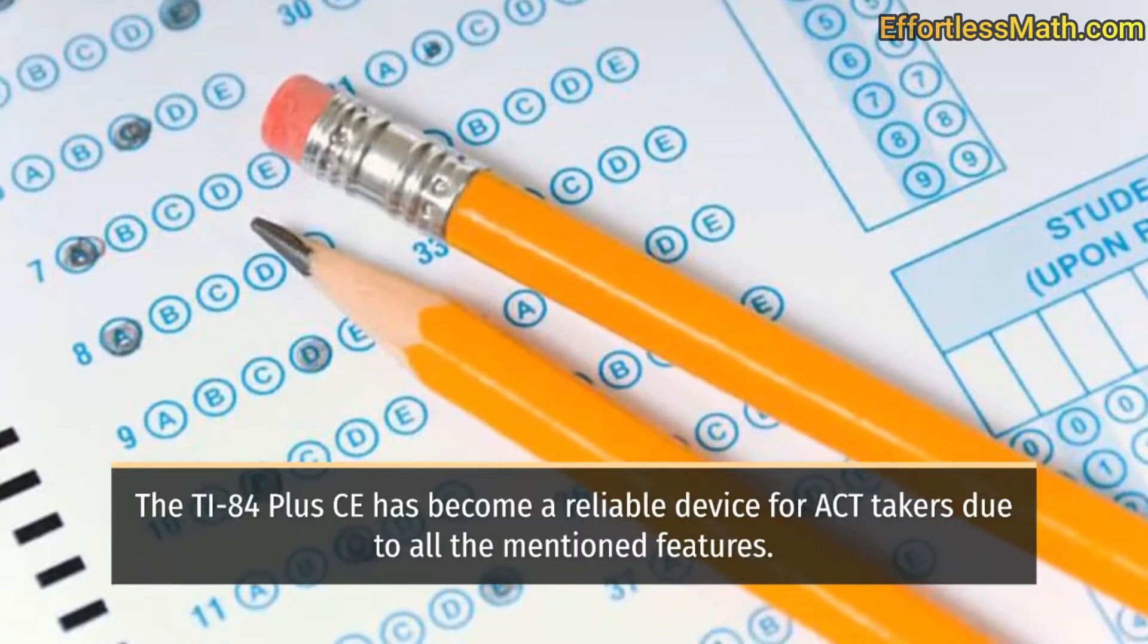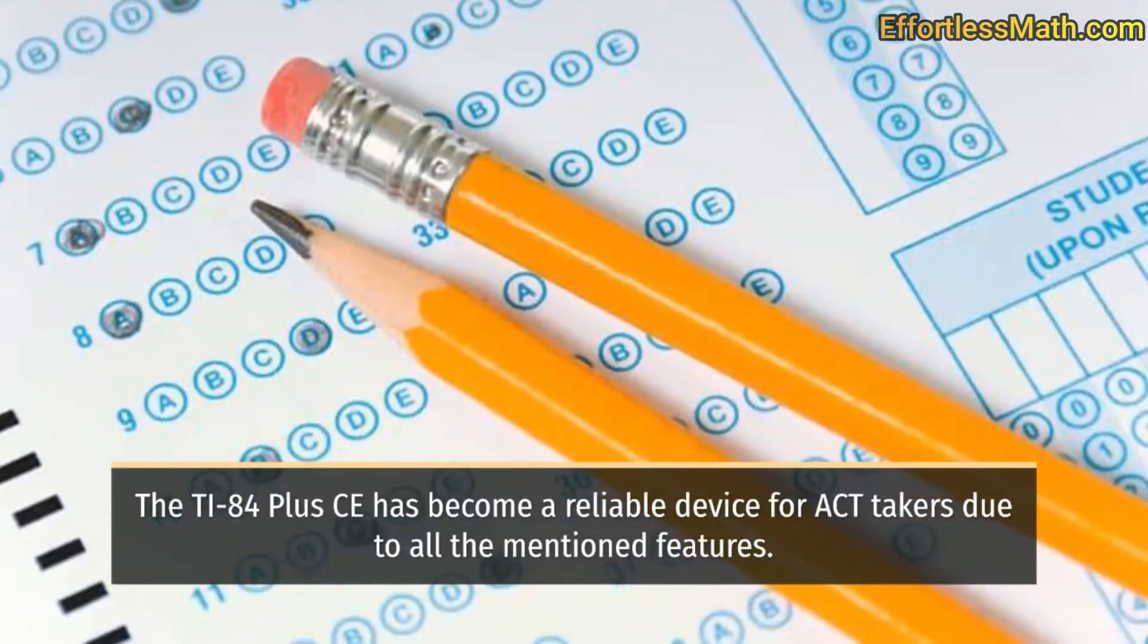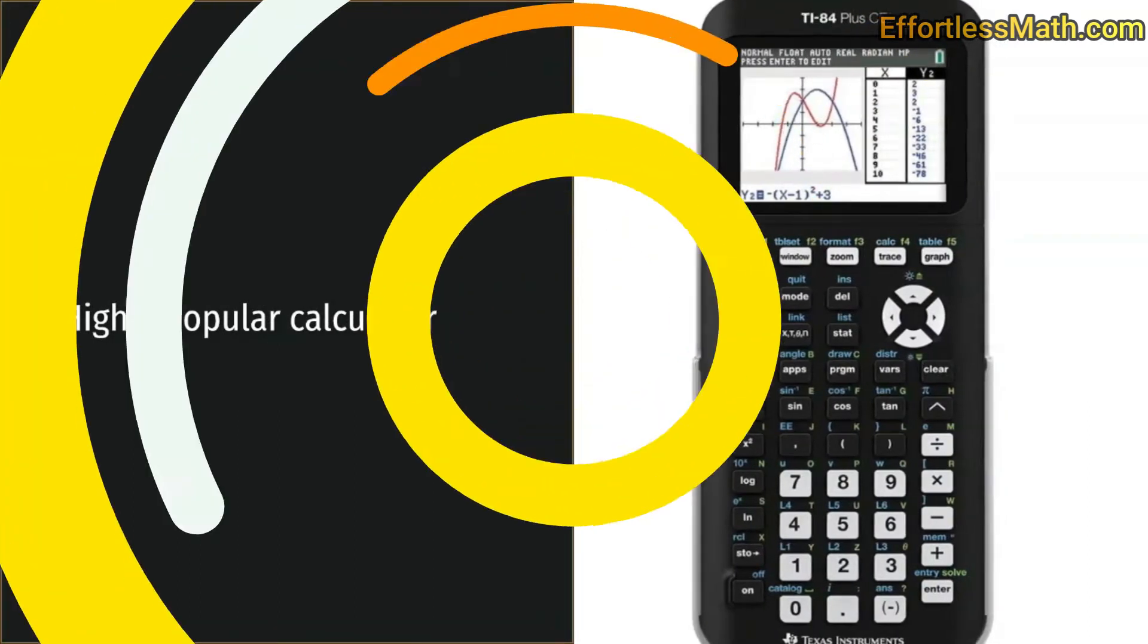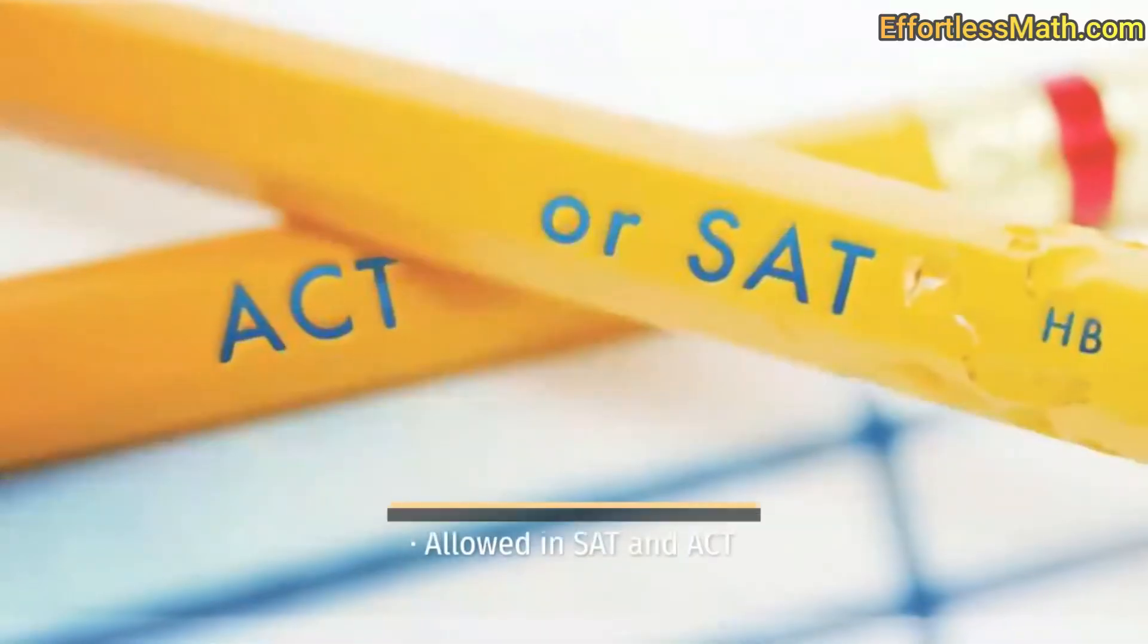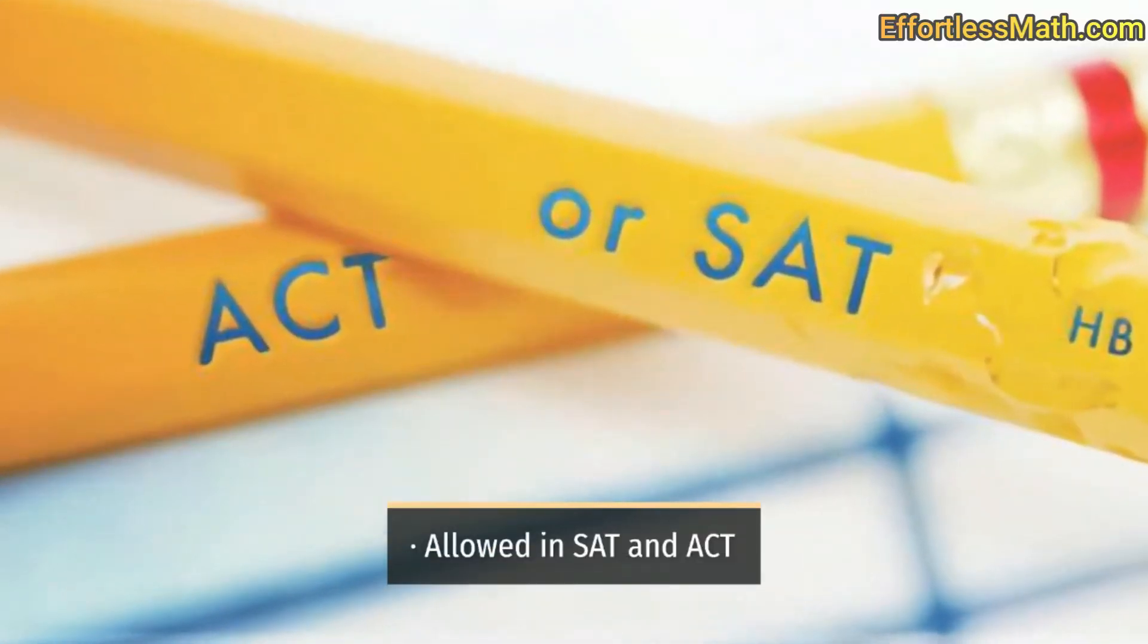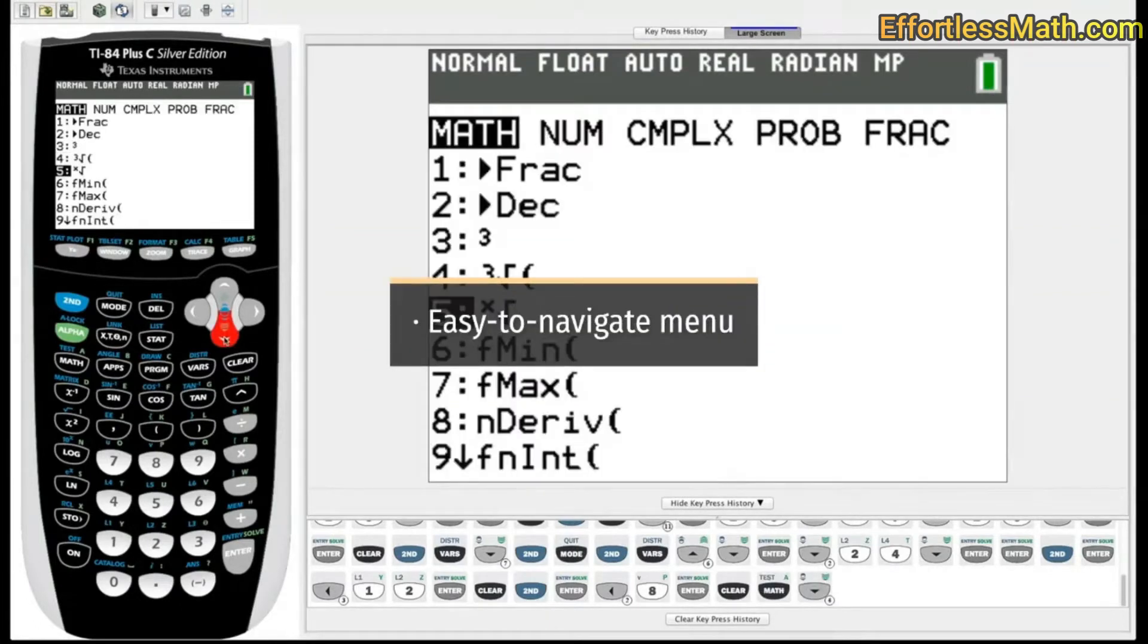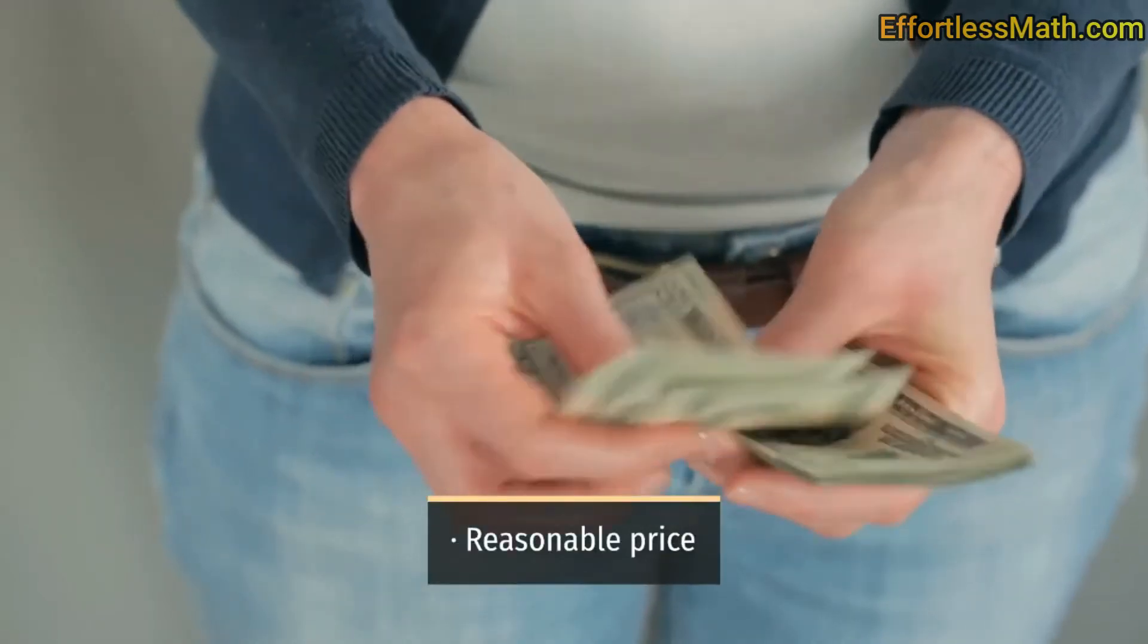The TI-84 Plus CE has become a reliable device for ACT takers due to all the mentioned features. Pros: highly popular calculator, third party codes available, allowed in SAT and ACT, easy to use device, easy to navigate menu, reasonable price.